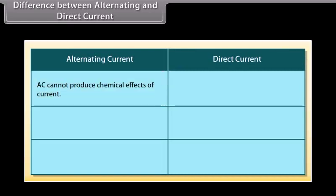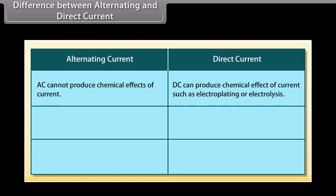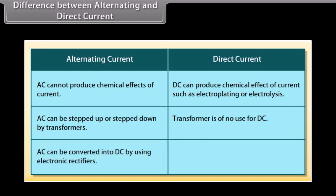The amplitude of current or voltage on both positive and negative sides remains constant in all cycles. The difference between alternating and direct current: AC cannot produce chemical effects of current, but DC can produce chemical effect of current such as electroplating or electrolysis. AC can be stepped up or stepped down by transformers, but transformer is of no use for DC. AC can be converted into DC by using electronic rectifiers, whereas DC can be converted into AC by inverters.